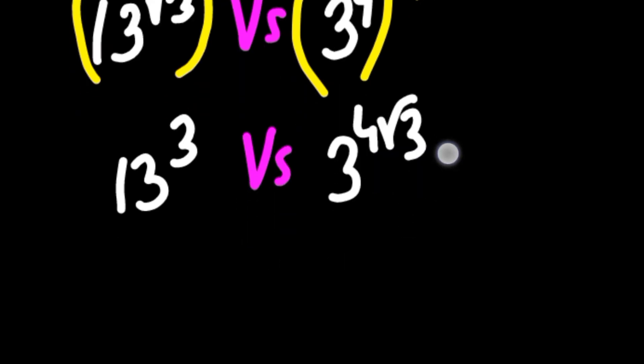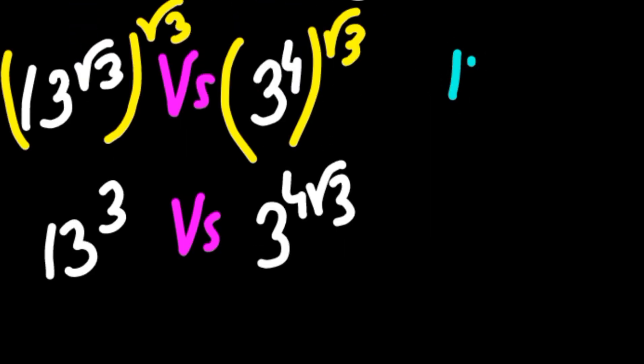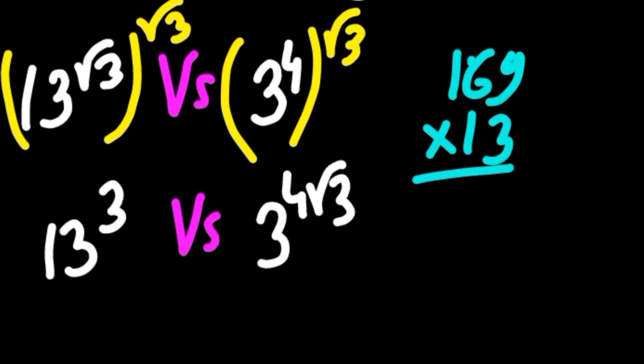Now let's calculate 13's cube. We know that 169 is the square of 13, so multiplying it with 13 will give 2,197.